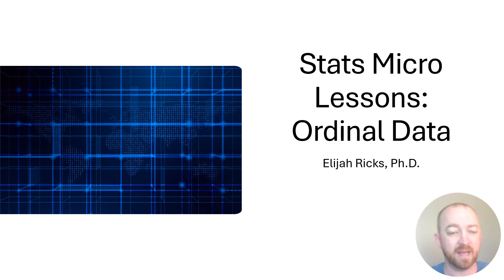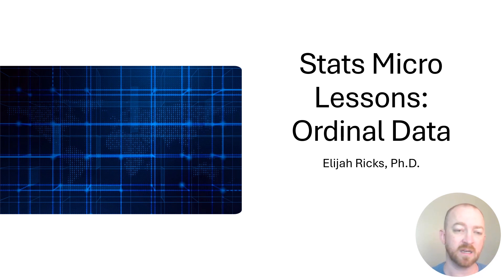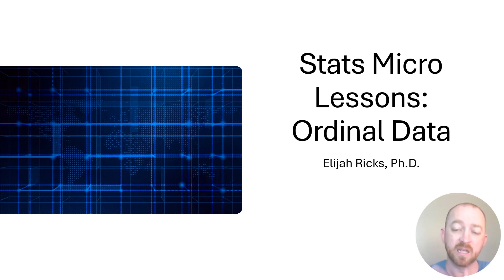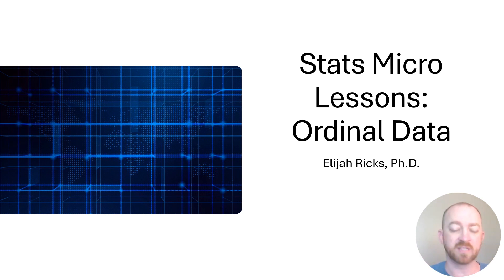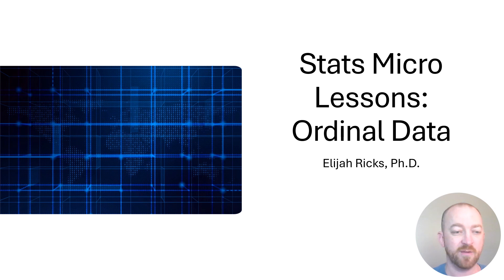Hi everybody and welcome back. We're going to continue on with what we covered last time. Last time we covered purely categorical data versus what we refer to as continuous data. Categorical data merely distinguishes between the values that the variable can be, and continuous data does other things, but at a bare minimum it has an order to it. We're going to dive more into that topic today for just a few minutes, so let's get going.